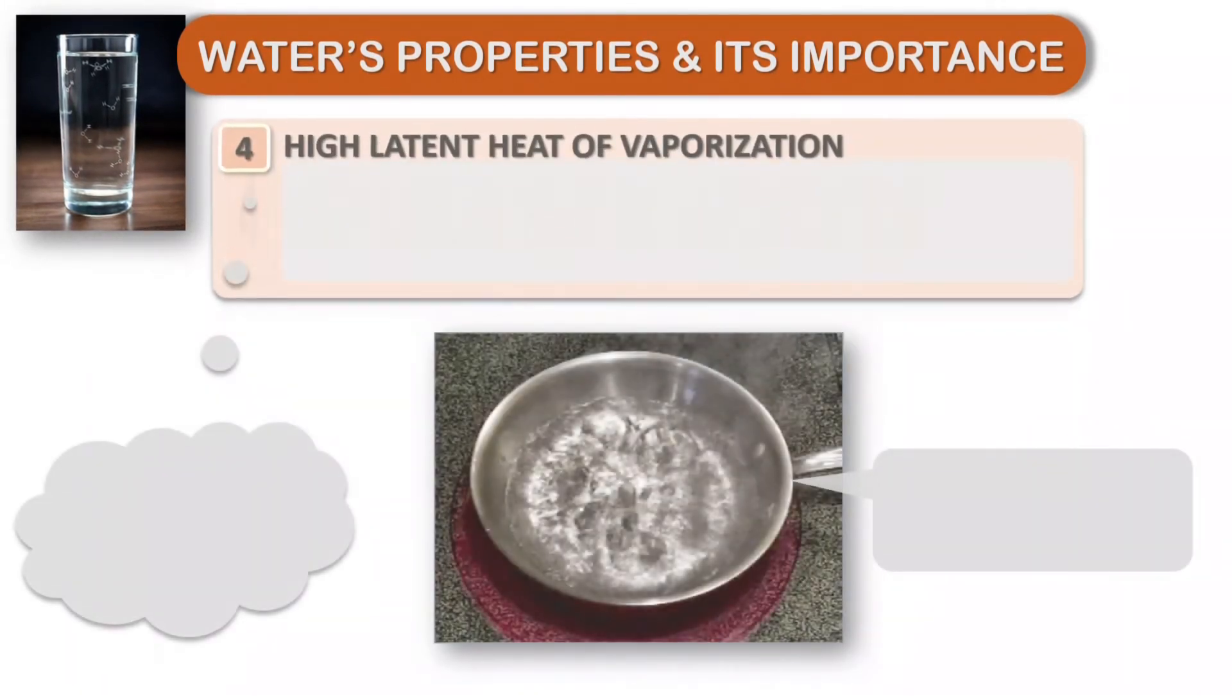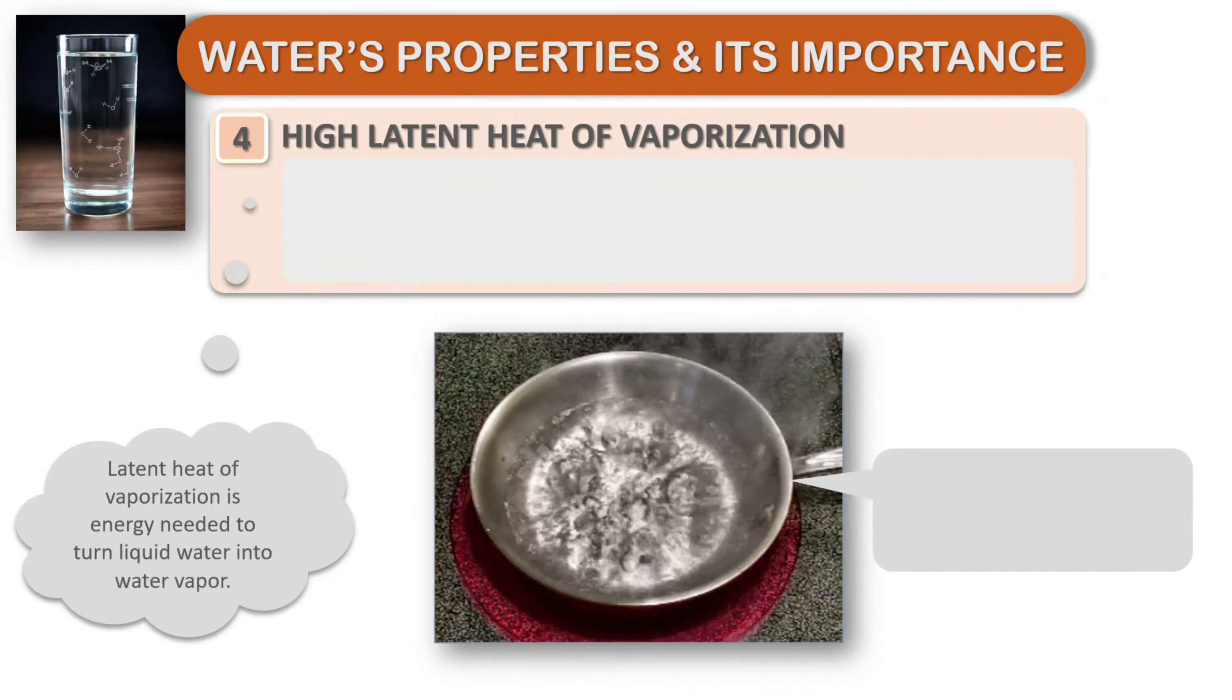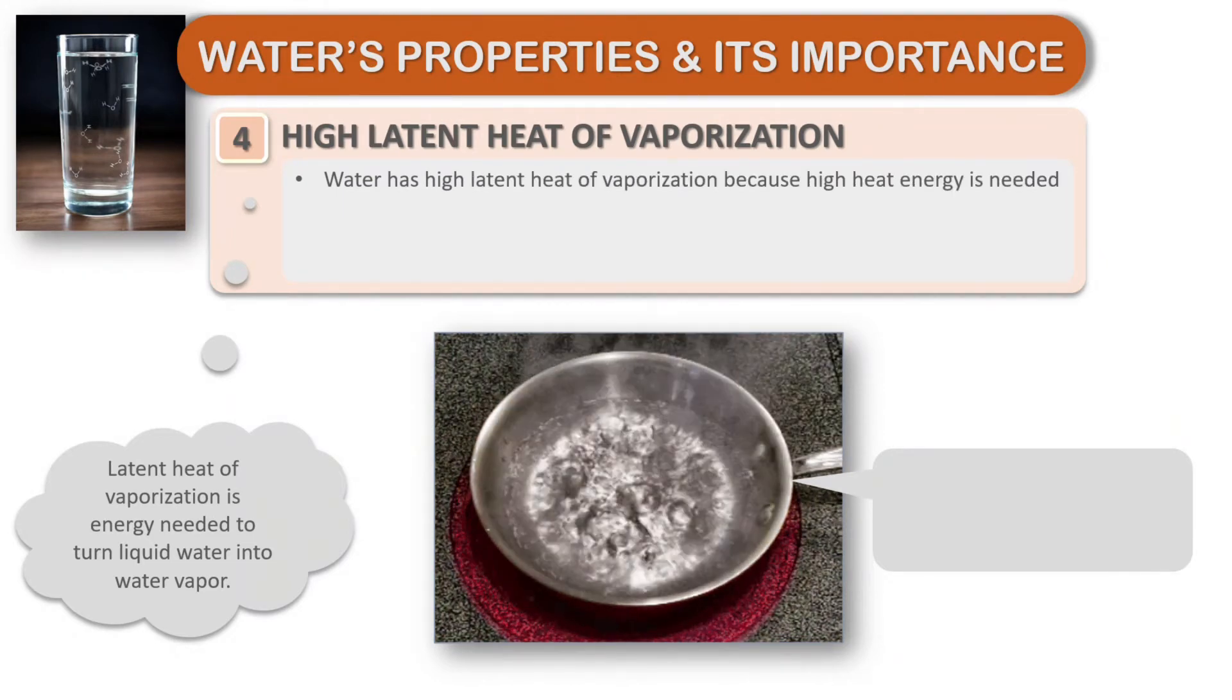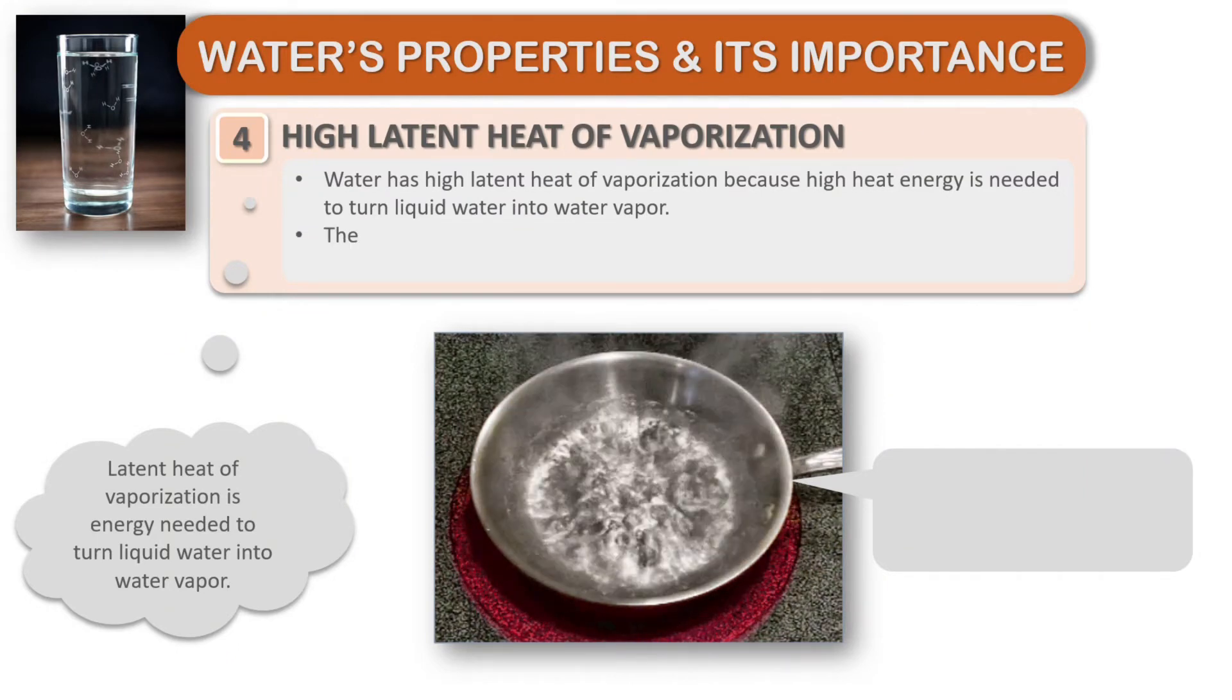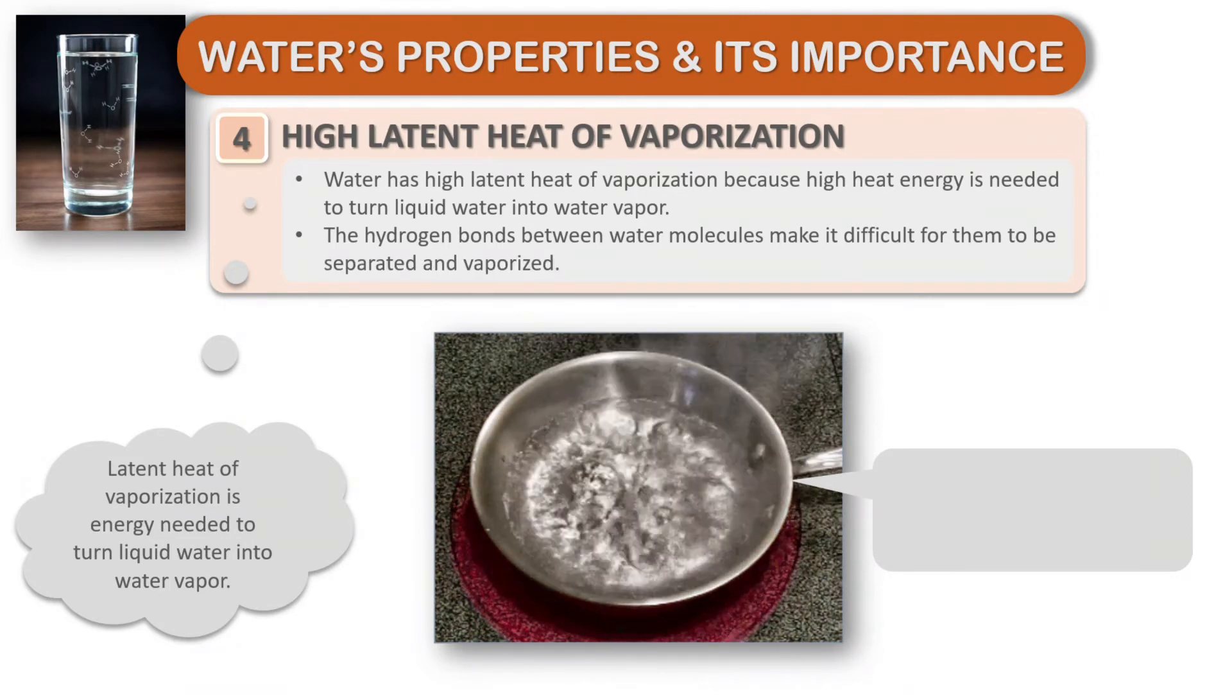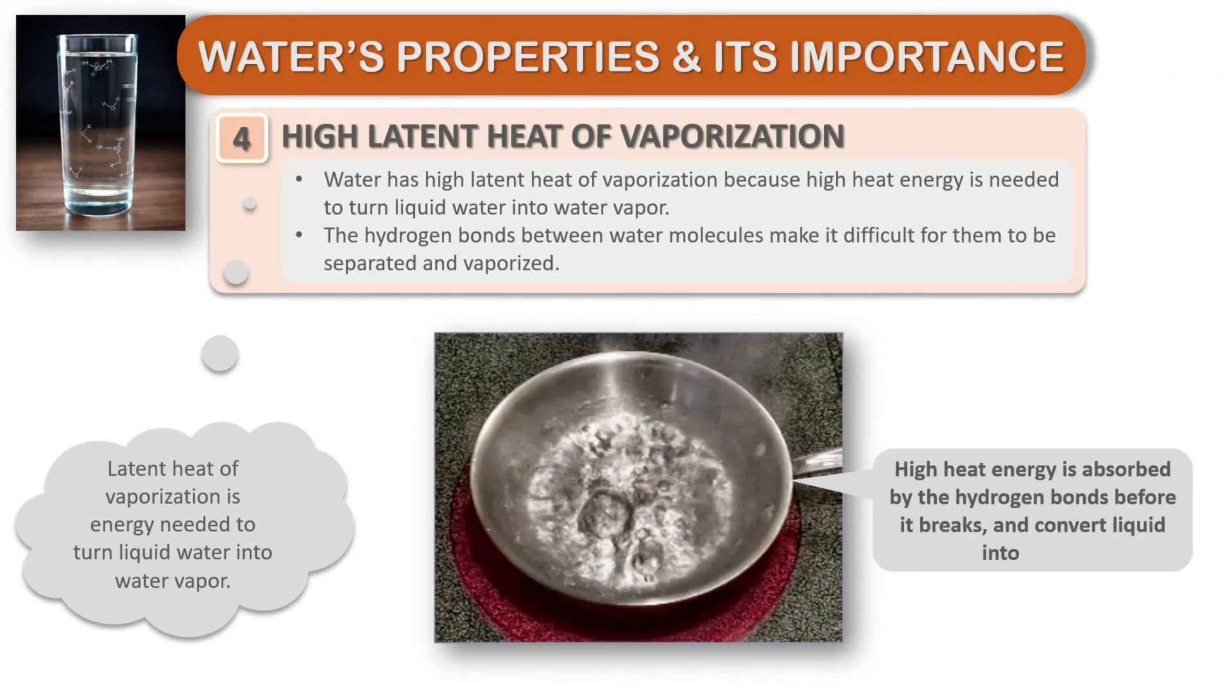Water has high latent heat of vaporization. Latent heat of vaporization is energy needed to turn liquid water into water vapor. Water has high latent heat of vaporization because high heat energy is needed to turn liquid water into water vapor. The hydrogen bonds between water molecules make it difficult for them to be separated and vaporized. High heat energy is absorbed by the hydrogen bonds before it breaks and converts liquid into vapor.